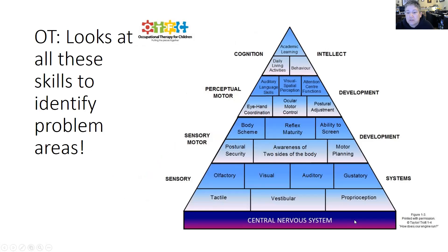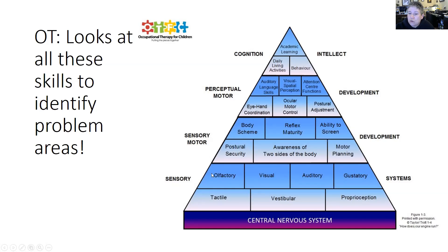OTs look at skills in a hierarchy to identify problem areas. The central nervous system takes in information and develops up into the basic sensory inputs — the most basic being tactile, vestibular, and proprioceptive. We also take in information through smell, vision, hearing, and taste, but these don't necessarily affect the ability to learn in the classroom as directly. Notice that academic learning is way up at the top of this hierarchy.